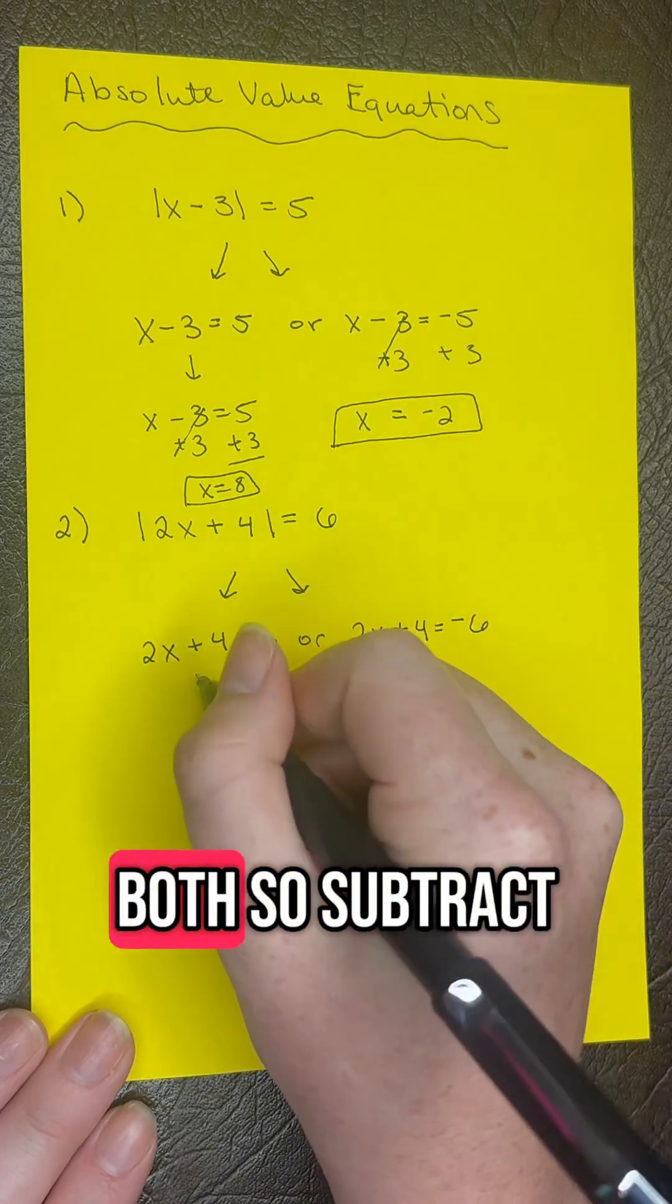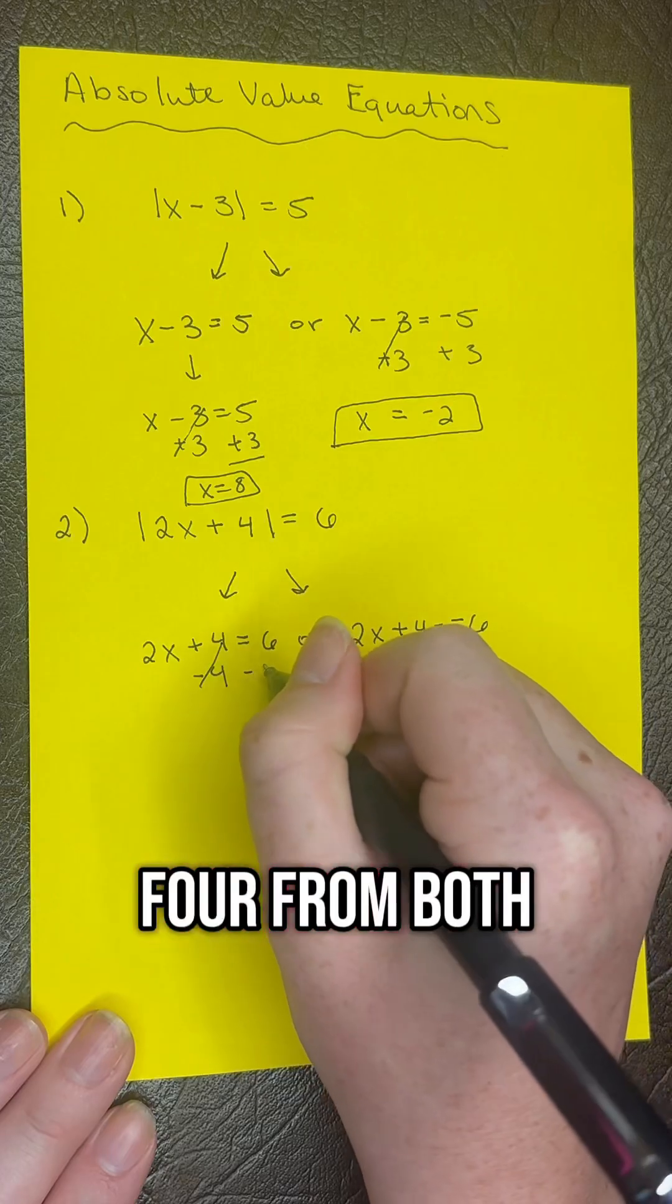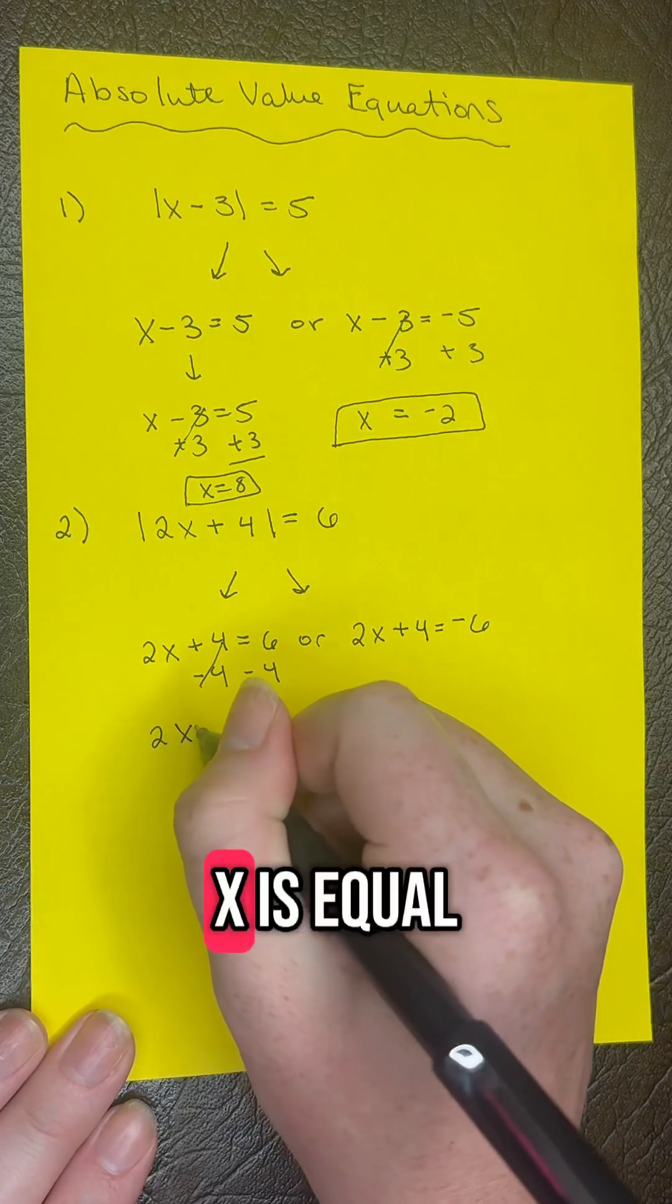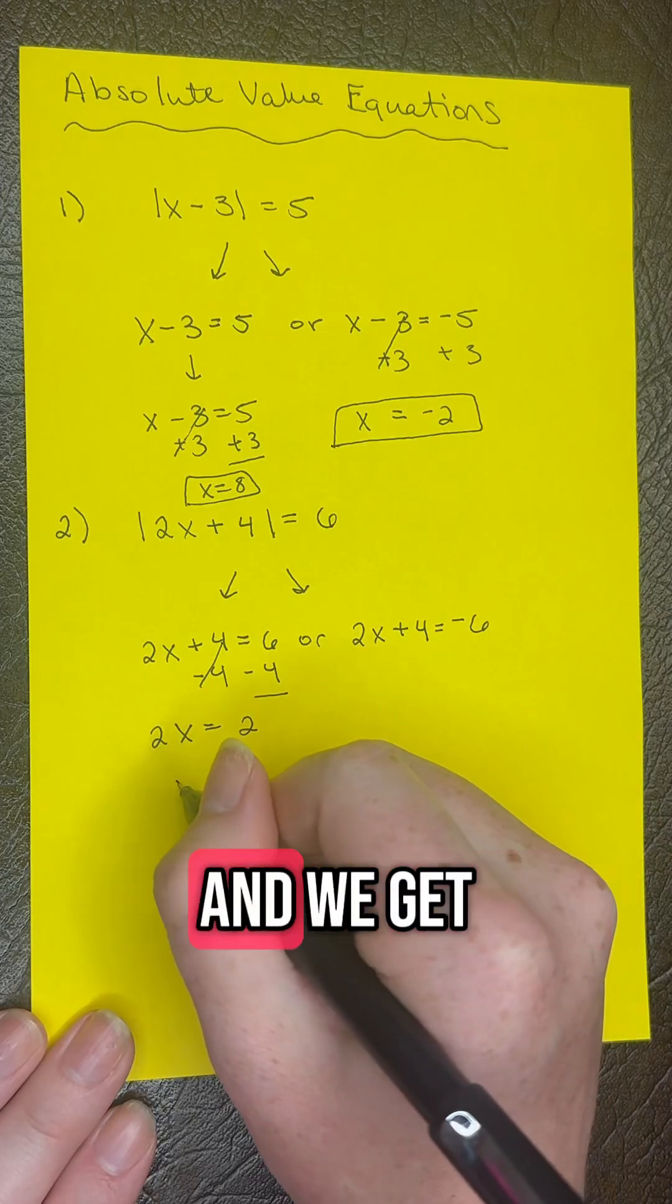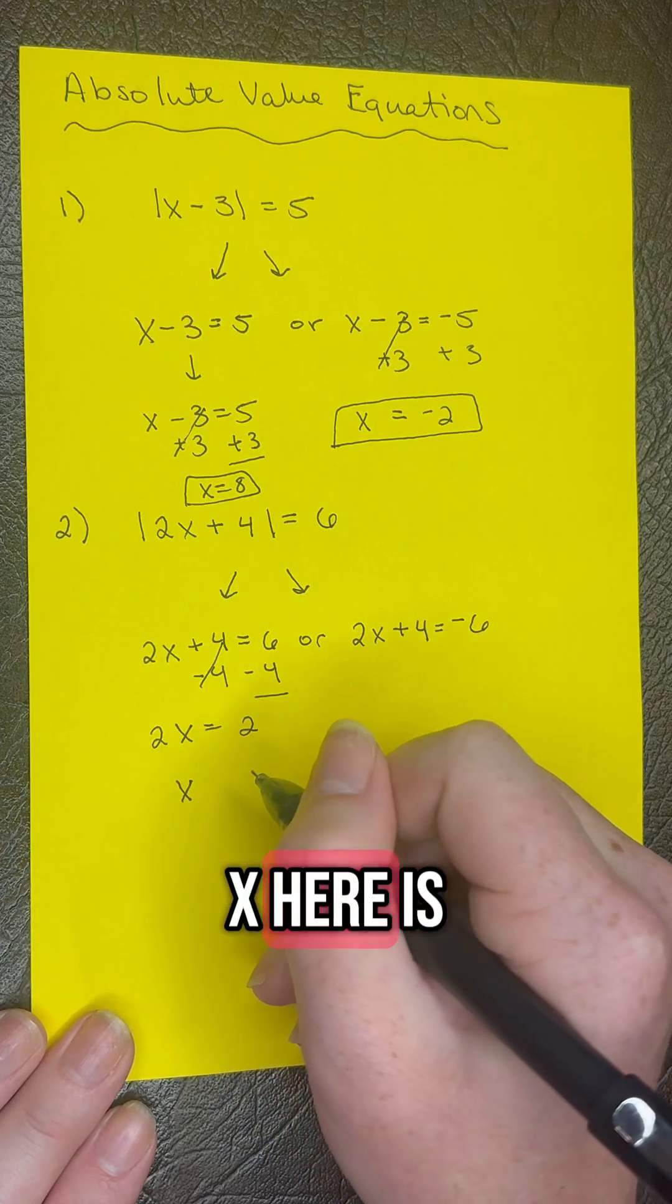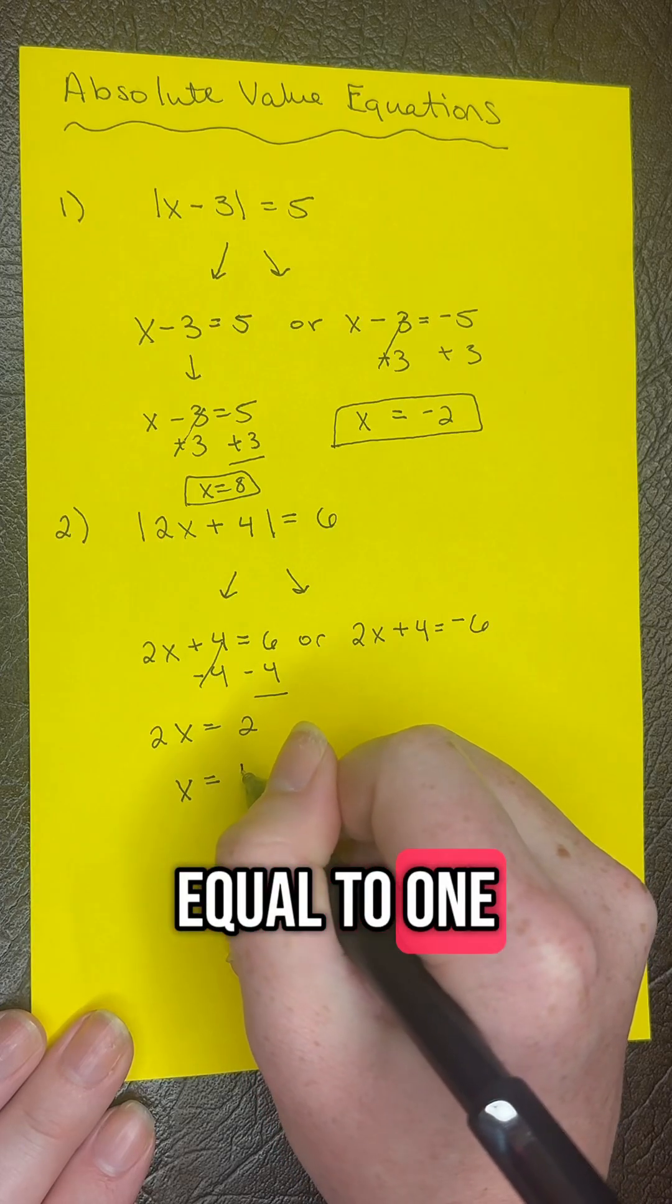Now let's solve both. Subtract 4 from both sides here, and we get 2x equals 2. Then we keep solving and get x equals 1.